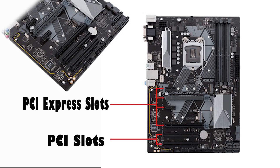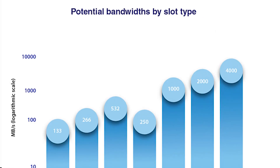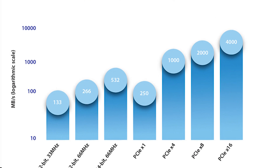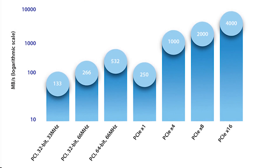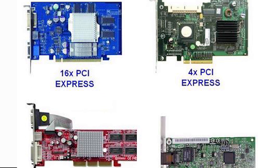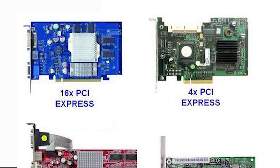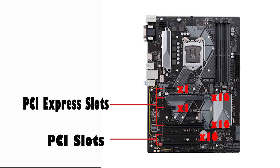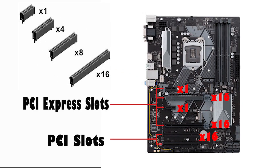PCIe is a standard type of connection for internal devices in a computer. The PCIe Express interface allows high-bandwidth communication between the motherboard and devices like graphics cards, hard drives, solid state drives, Wi-Fi, and other internal hardware. PCIe slots come in different physical configurations, and the number after the 'x' tells you how many PCIe lanes the slot has.